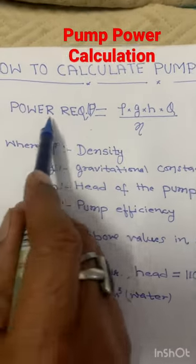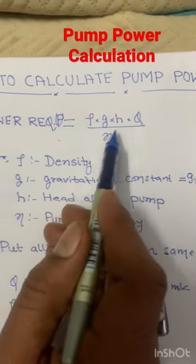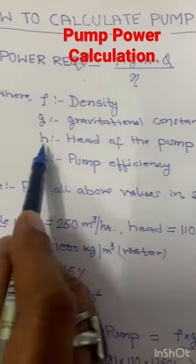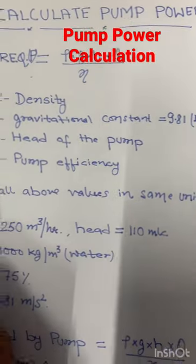How to calculate pump power. Pump power requirement is equal to ρ × g × h × q divided by efficiency, where ρ is density, g is gravitational constant, h is head of the pump, and ν is pump efficiency.